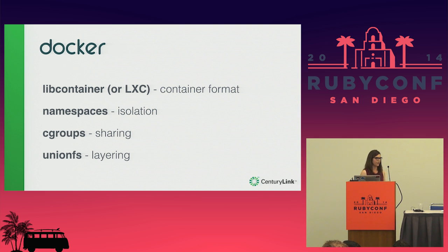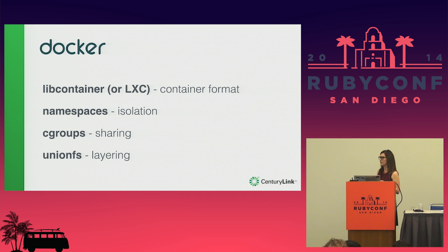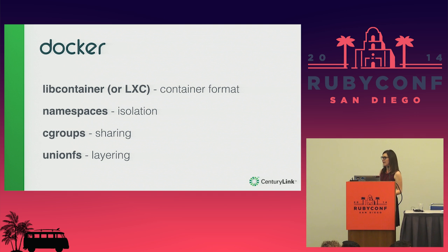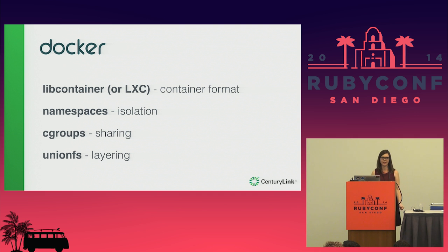The first one is libcontainer — this is the container format. Docker launched libcontainer, which is its own equivalent to LXC. Previously Docker was just building on top of LXC, which is why it could only run on Linux. But libcontainer is a different container format, very similar to LXC, but with the capability of running anywhere. You can see on the Docker blogs that they're starting to think about running it on Windows, and maybe natively on Mac soon — all due to this libcontainer container format.